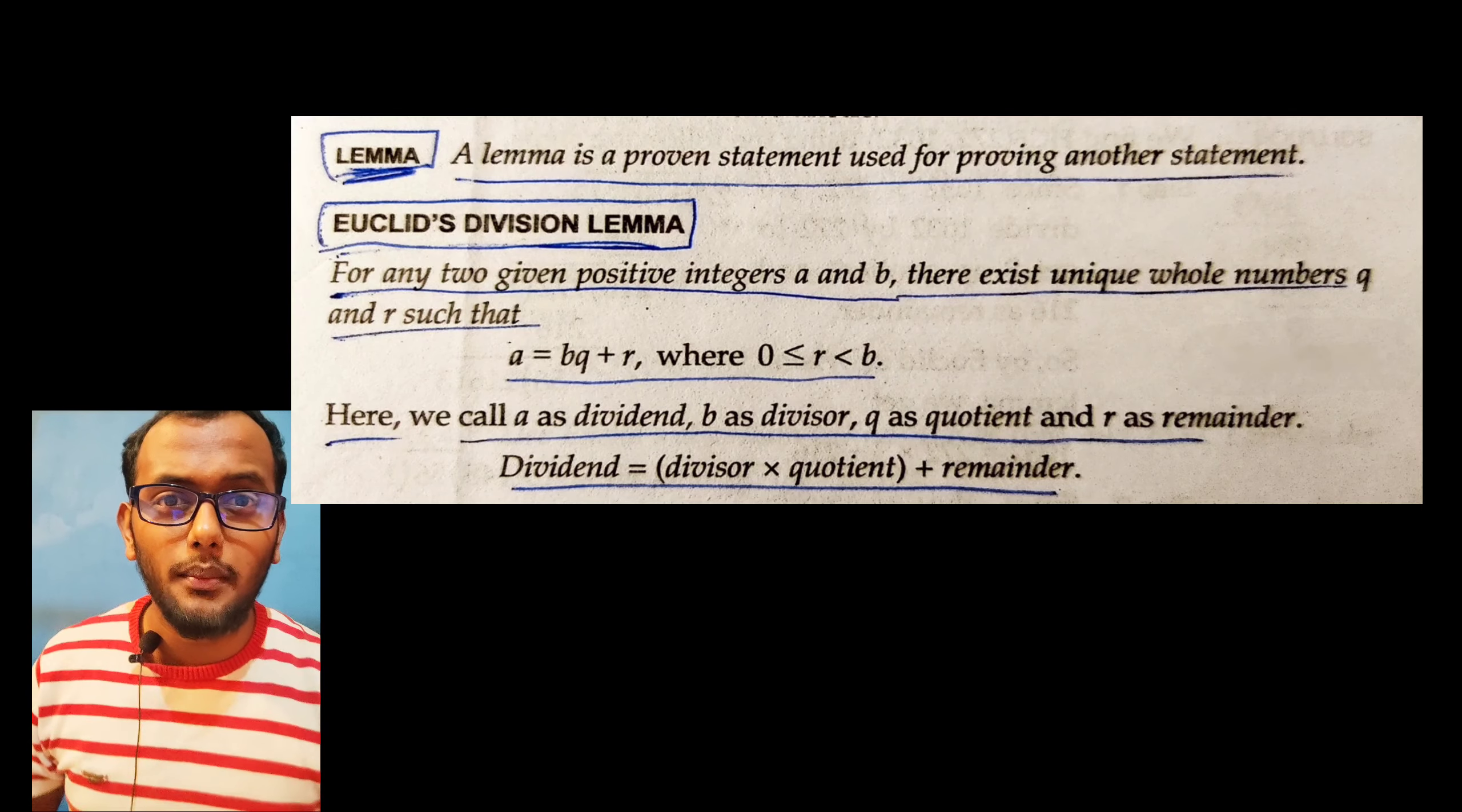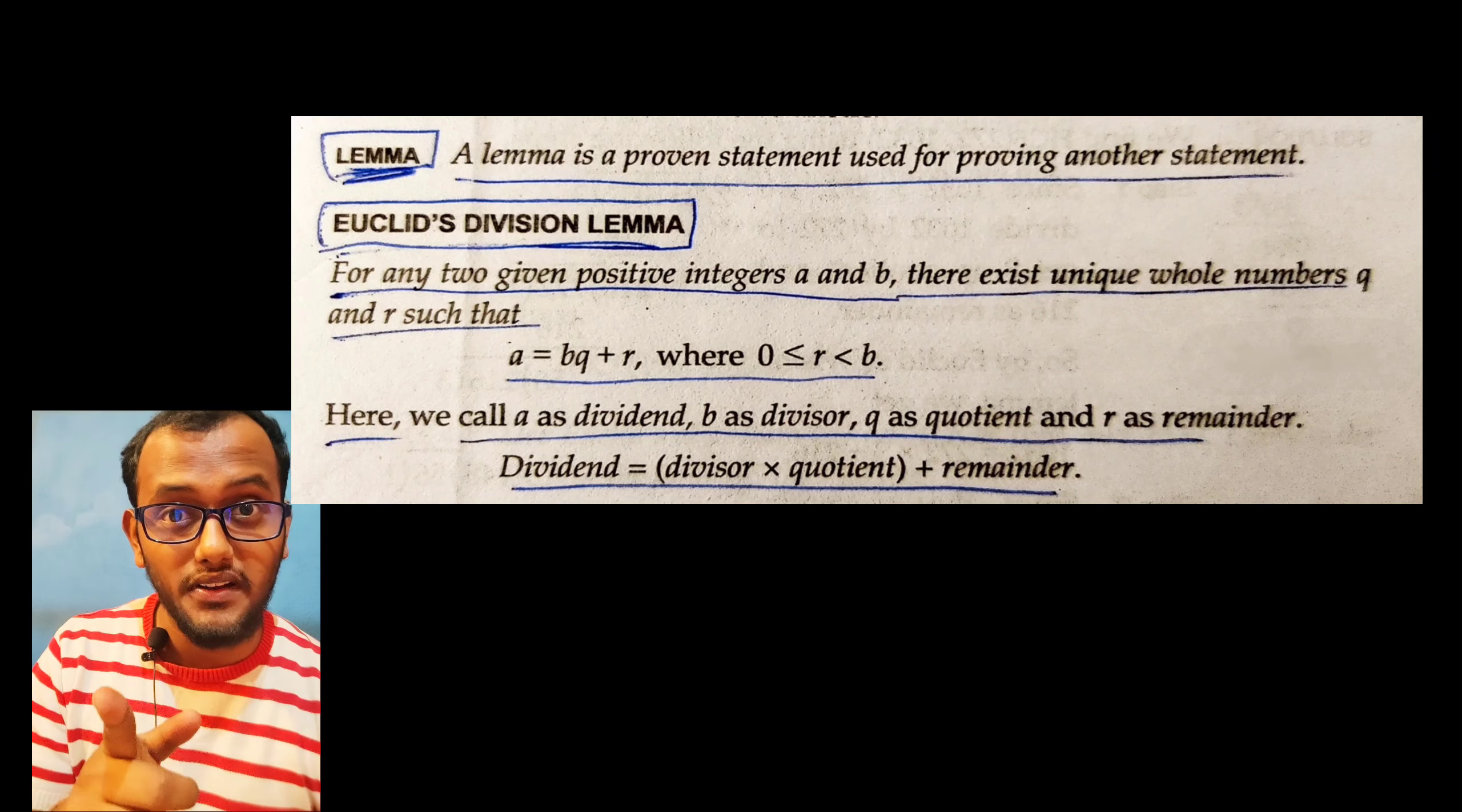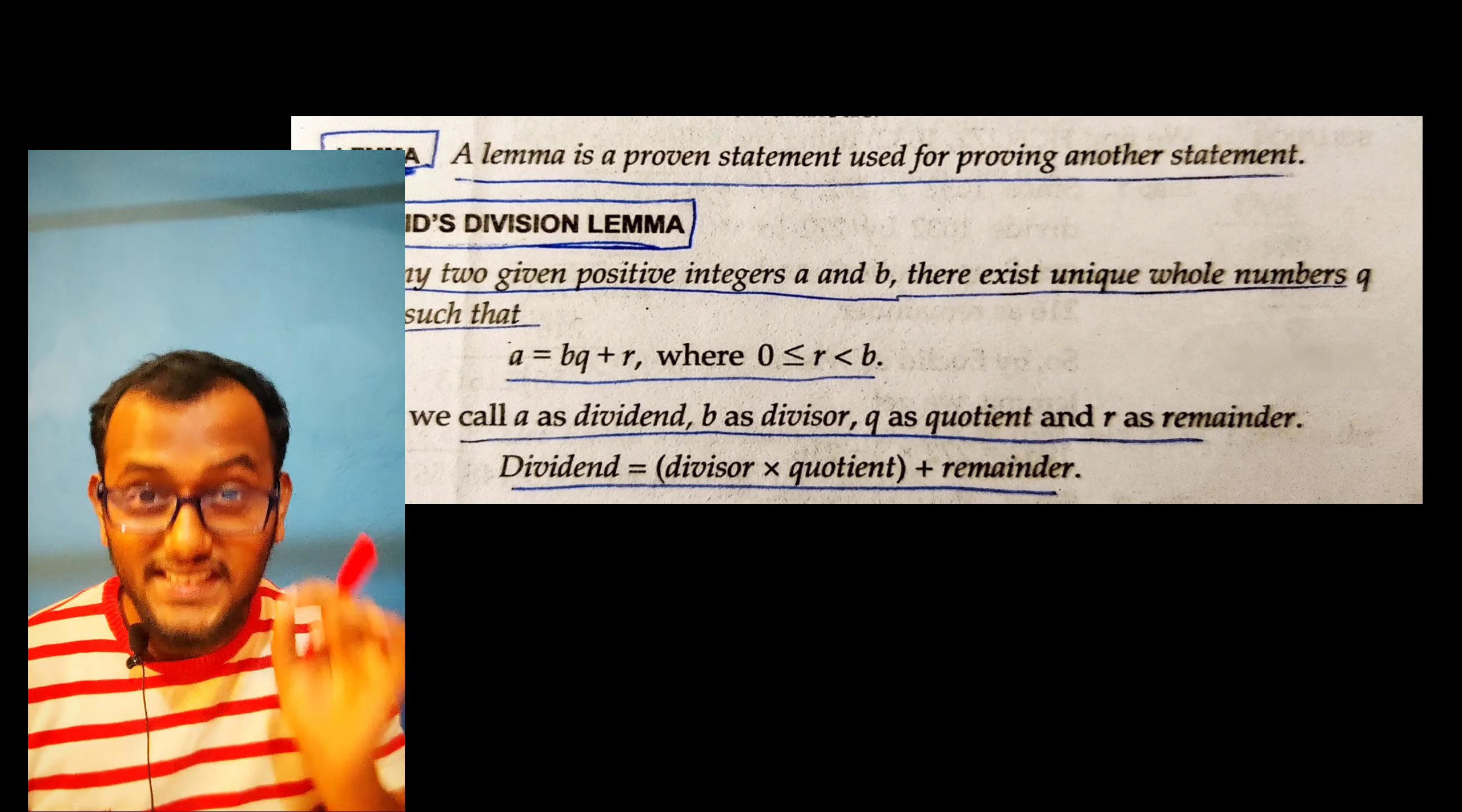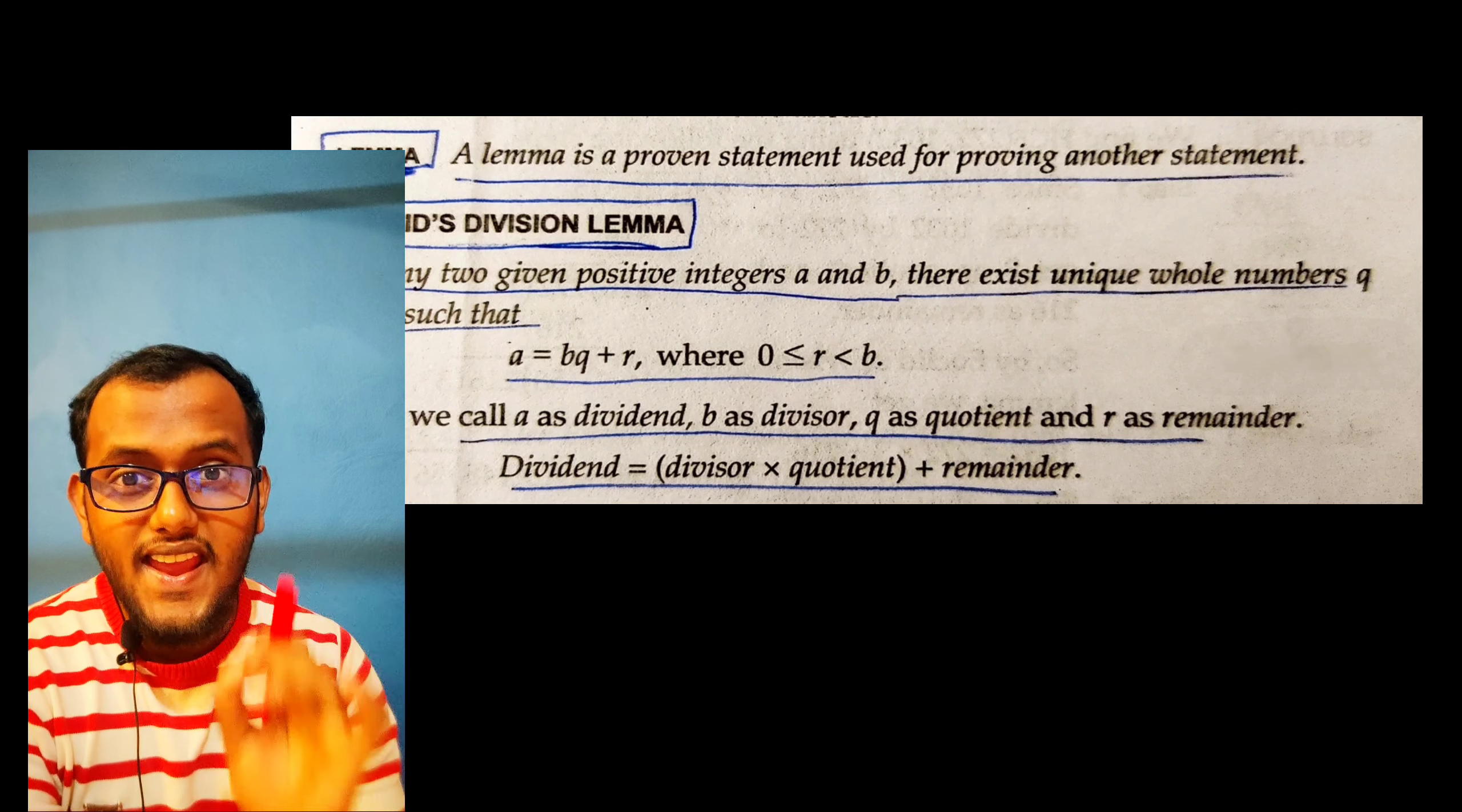What is a lemma? A lemma is a proven statement used to prove another statement. So what does Euclid's Division Lemma say? It states that for any two positive integers a and b, there exist unique integers q and r such that...